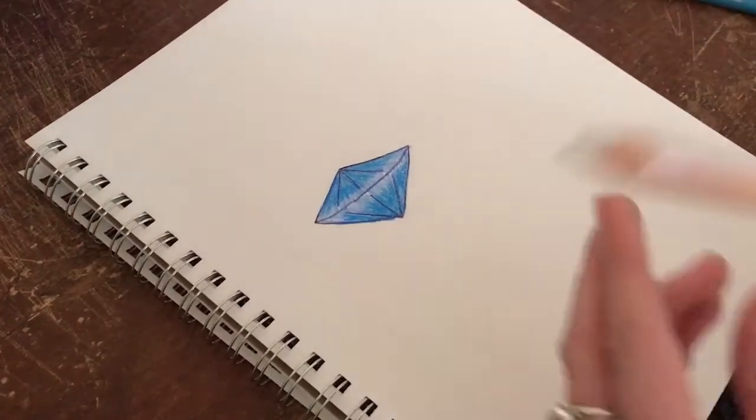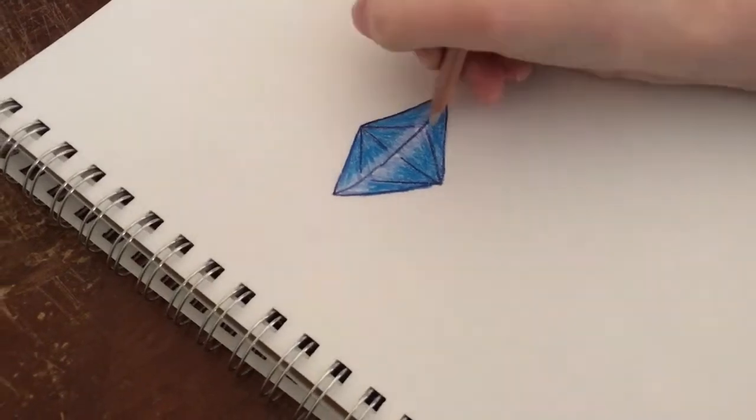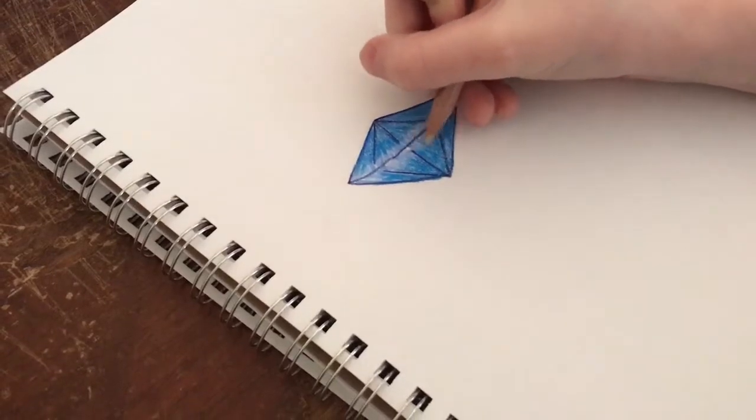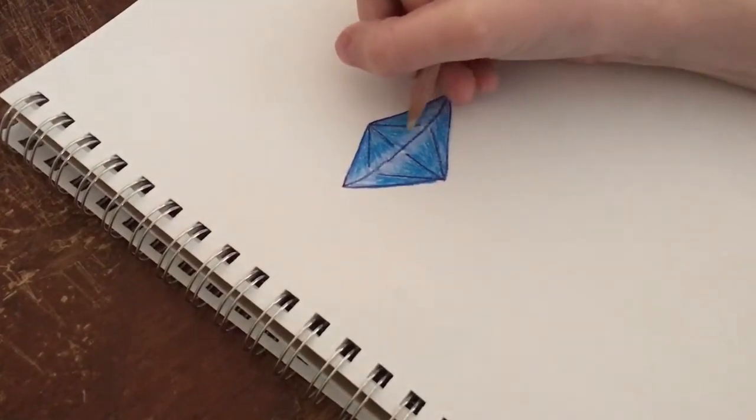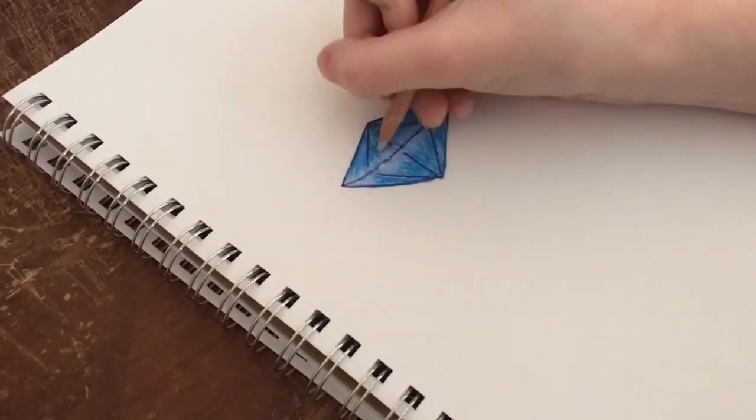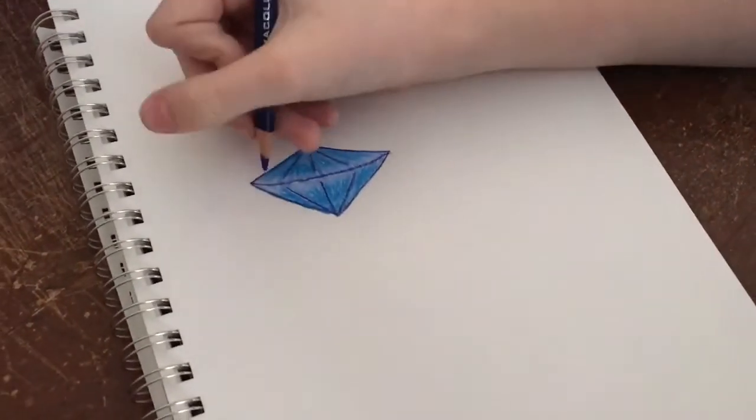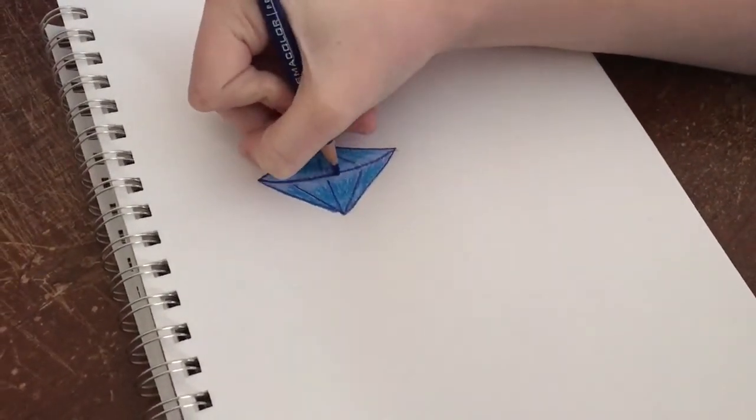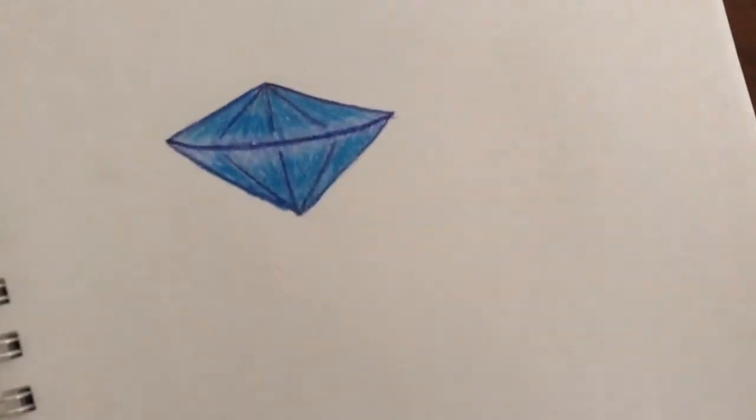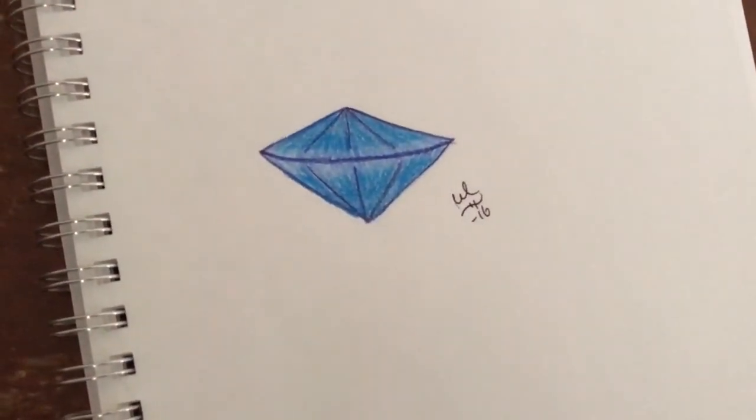And then I'm going to use the blender pencil to blend everything in. And I'm just going to do the line in the middle again because it's been colored over a bunch. And there you have it. I'm just going to do my signature. And now I'm done.